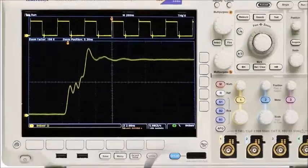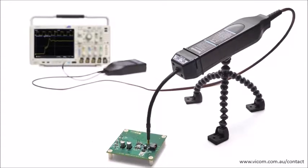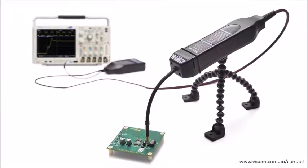The ISOVUE isolated measurement system combines high bandwidth, high common mode range and 1 million to 1 common mode rejection.